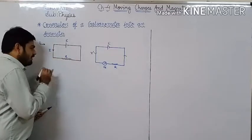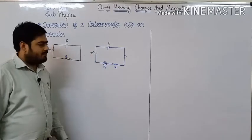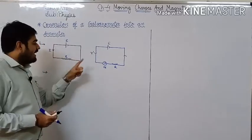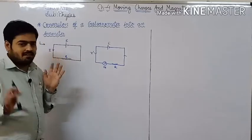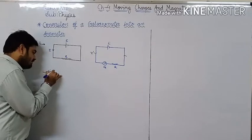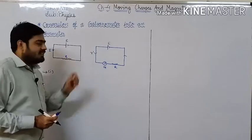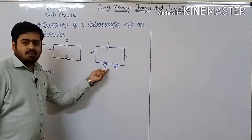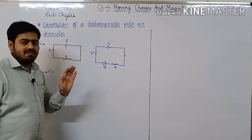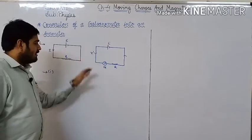Now, current passing through resistance R is I dash. First, current was I. Why did it happen? Directly, we can't use this galvanometer as an ammeter. Why can't we use it? What is the problem? The first problem is that we cannot measure currents accurately when we connect galvanometer in series with resistance R.